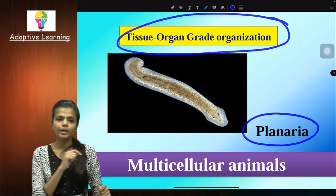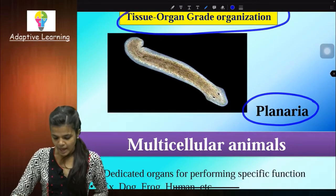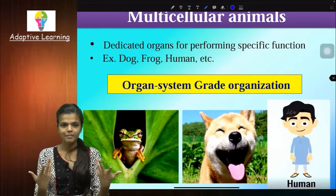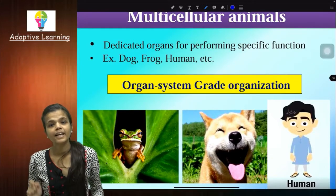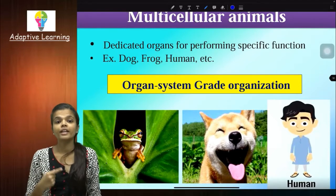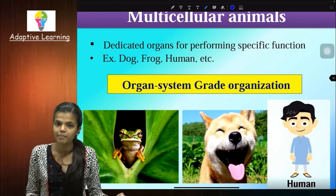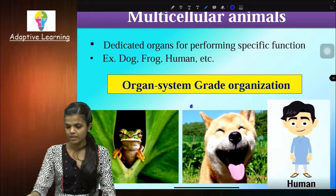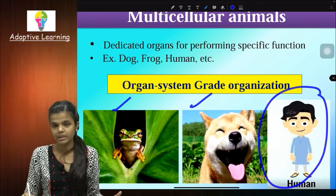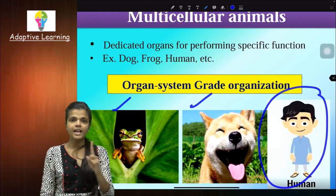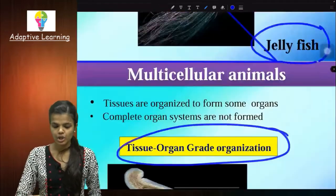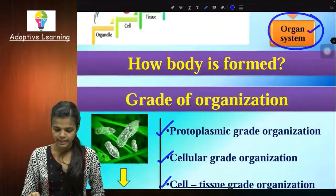This is the body organization, and at the end that's us. Dedicated organs performing specific functions in coordination with each other. Example: dog, frog, and us — definitely us, human beings. So we are at the highest level, that is organ-system-grade organization.